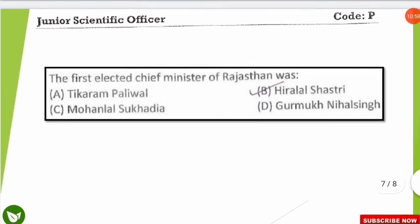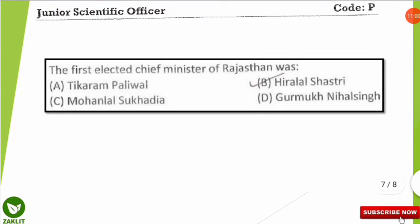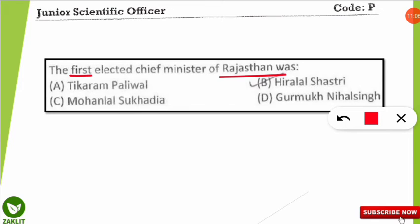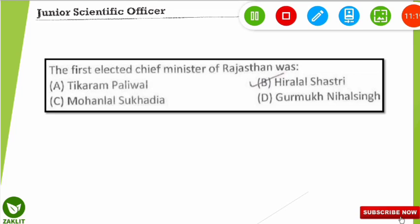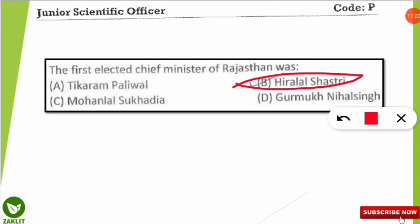A correction from the previous video: the question about the first elected Chief Minister of Rajasthan — we said Hira Lal Shastri, but the correct answer is Tika Ram Paliwal, who was the first elected Chief Minister. If the question asks for the first Chief Minister overall, the answer is Hira Lal Shastri, but for the first elected Chief Minister after independence, it is Tika Ram Paliwal. Subscribe the channel for further updates, and all the best for the examination — believe in yourself!